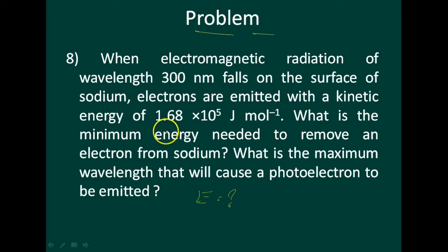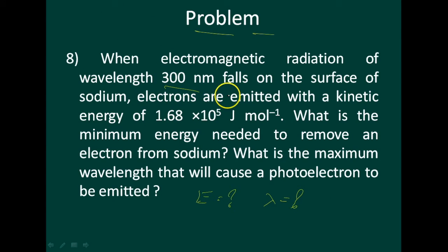So what they are asking: minimum energy means E — what is the energy required to remove the electron — and what is the maximum wavelength lambda. They have given 300 nanometer wavelength radiation and the kinetic energy. Using this, we'll now solve the problem.